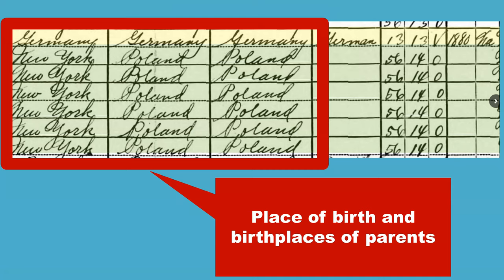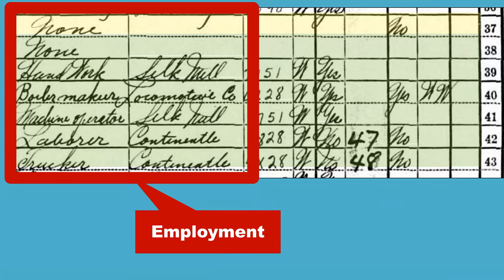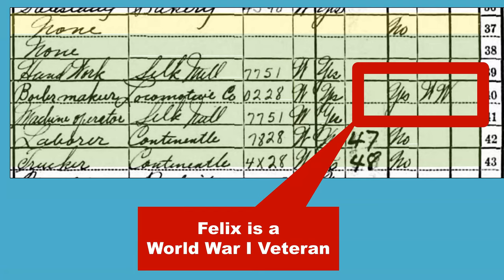Birth places of the individual and their parents are listed by either country or state if they were born in the U.S. Stephen immigrated in 1880 and was naturalized by 1930, meaning he became an American citizen. Profession and industry or business of employment is recorded. Daniel and Jerome faced unemployment during the Great Depression, and Felix was a World War I veteran.